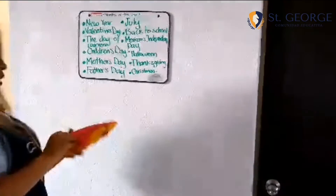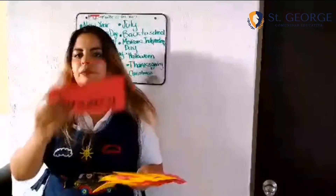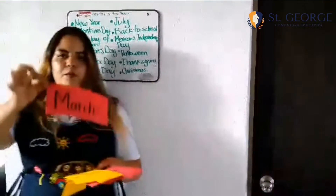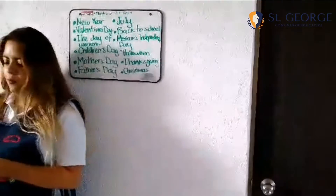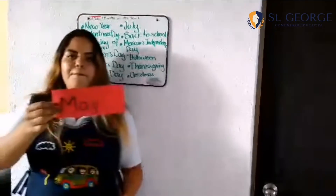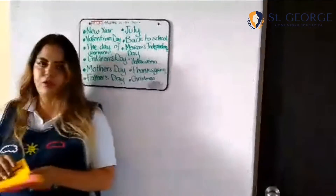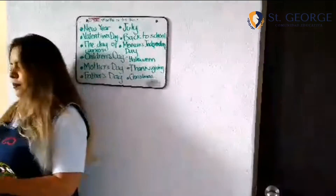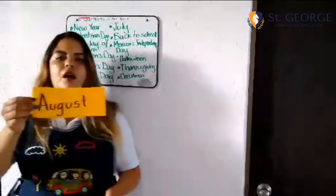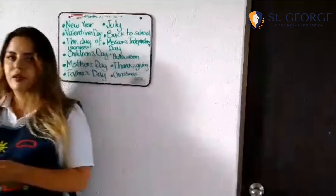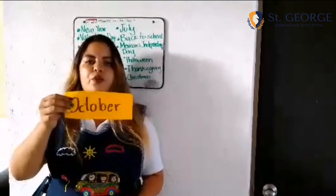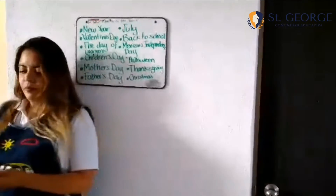Now let's go through the months together. January. February. March. March. April. May. June. July. August. September. October. November.